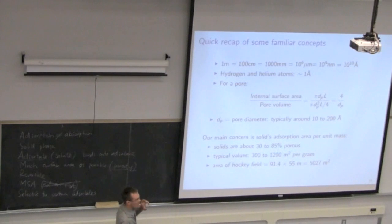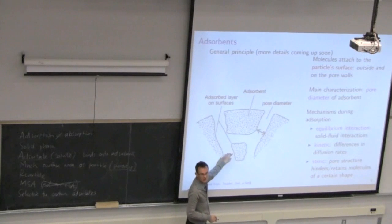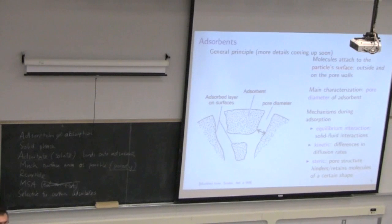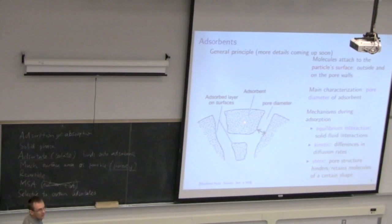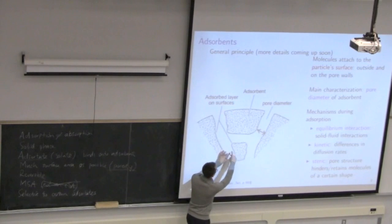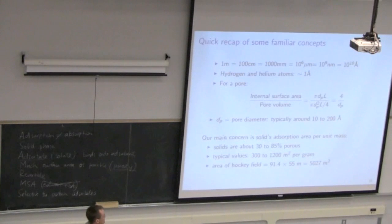Why does pore size matter? We need to know if the molecules we're trying to adsorb can even move down these pores. A hydrogen or helium atom is about 1 angstrom; water is about 3 angstroms. If a pore is 10 angstroms in diameter and a water molecule attaches to one surface, it's already taking up half the pore volume — two side-by-side block the pore, preventing further water from diffusing in. We need enough space for material to diffuse in, attach to the wall, but still leave space for new material to enter.